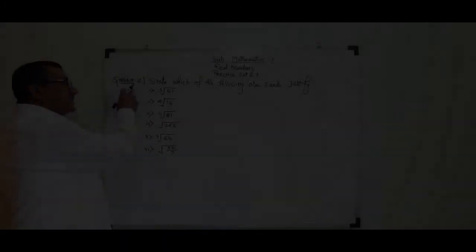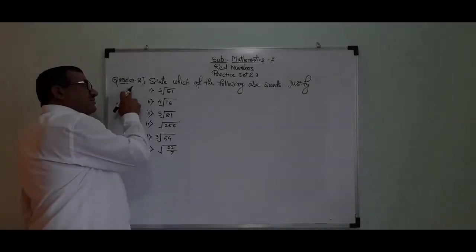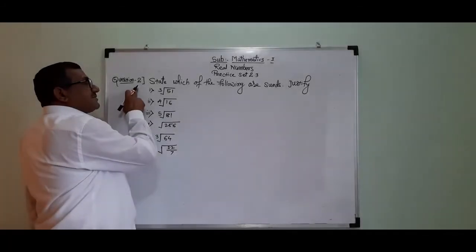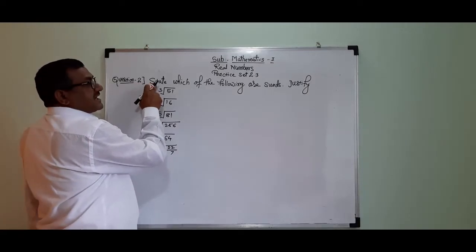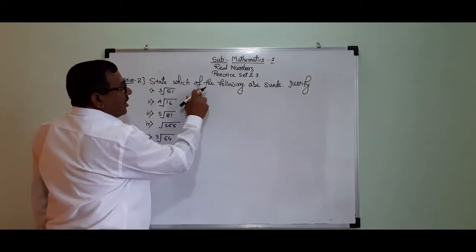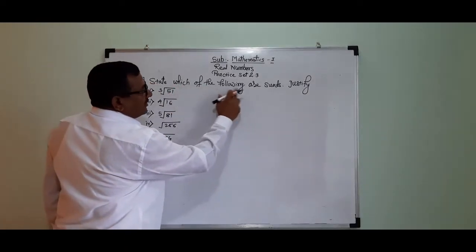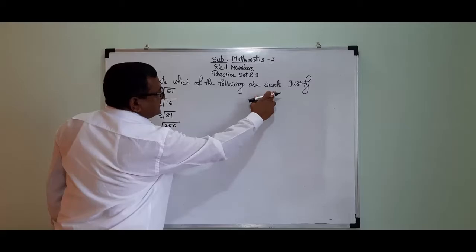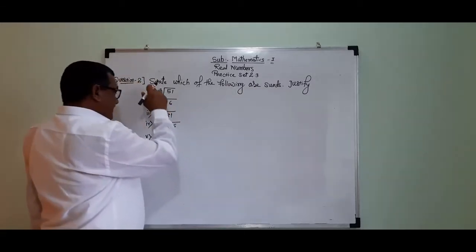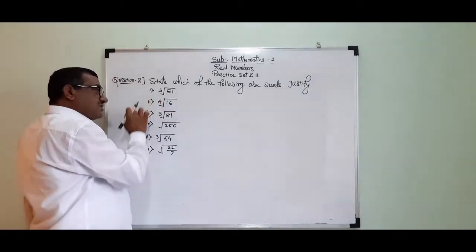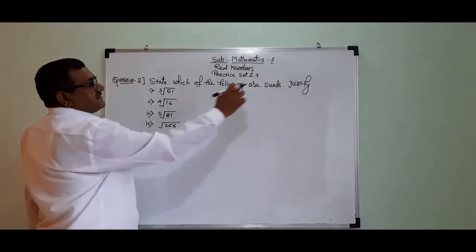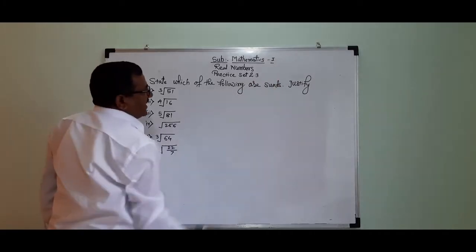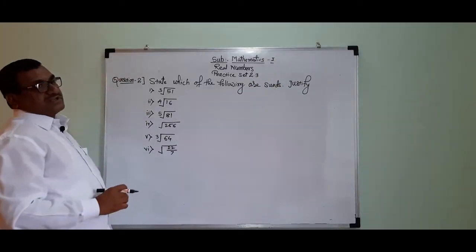In question number 2, there is a question: which of the following are surds? Which of the following are surds? Justify. That is the question.